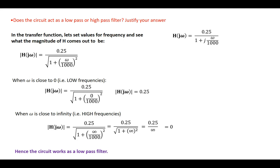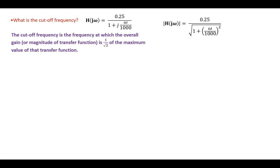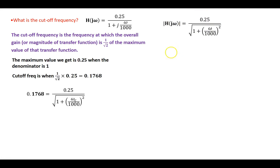Now we need to find the cutoff frequency. The cutoff frequency is the frequency at which the overall gain — the magnitude of the transfer function — equals 1 over square root of 2 of the maximum value. The maximum value occurs when the denominator equals 1, which happens at omega equals 0. So the maximum transfer function value is 0.25, and the cutoff occurs when the magnitude reaches 1 over square root of 2 times 0.25, which is approximately 0.1768.